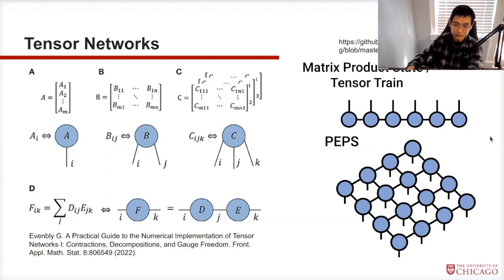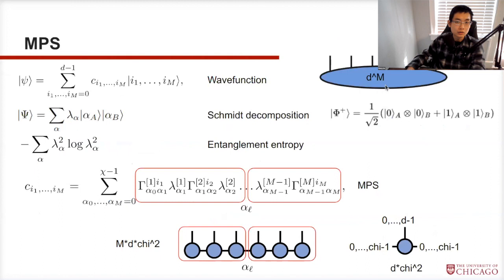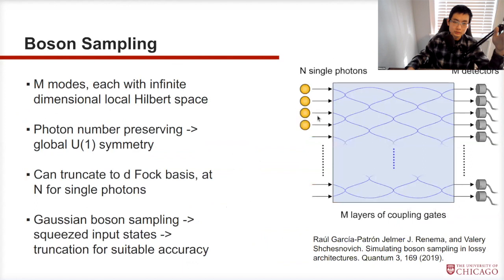This one-dimensional representation is especially important because it's a very good way to represent one-dimensional many-body wave functions — specifically, it's called the Matrix Product State (MPS). We will use exactly this formalism for our boson sampling simulation. The wave function I need to write down covers M positions, and at each position I specify how many photons there are, giving M degrees of freedom.